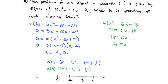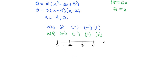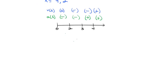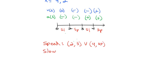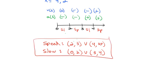Interpreting results: between 0 and 2, they're in opposite directions — slowing down. Between 2 and 3, same direction — speeding up. Between 3 and 4, opposite directions — slowing down. From 4 to infinity, same direction — speeding up. So the object speeds up on (2, 3) ∪ (4, ∞) and slows down on (0, 2) ∪ (3, 4). The particle is actually slowing down to ultimately change directions.